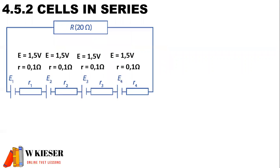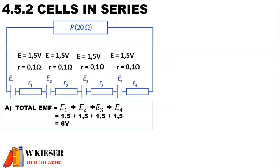In this example, we have four cells connected in series. Each cell has an internal resistance of 0.1 ohms and an EMF of 1.5 volts. This circuit is connected across an external load of 20 ohms. To calculate the total EMF for cells in series, it is E1 plus E2 plus E3 plus E4, giving us a total EMF of 6 volts.